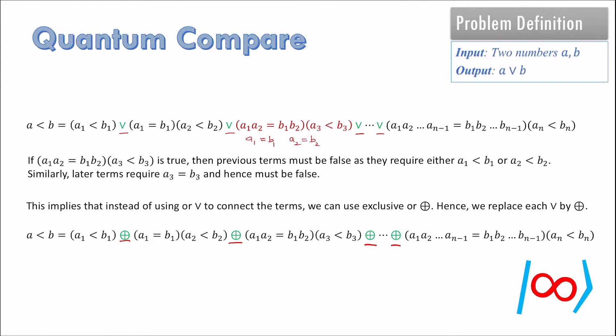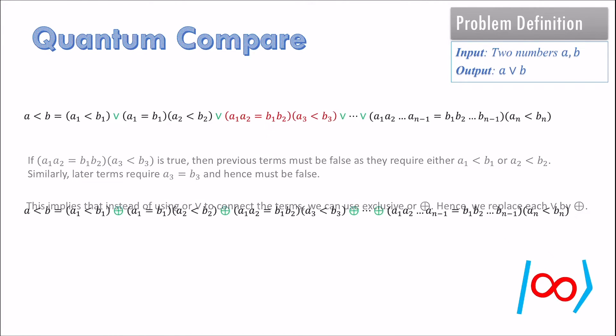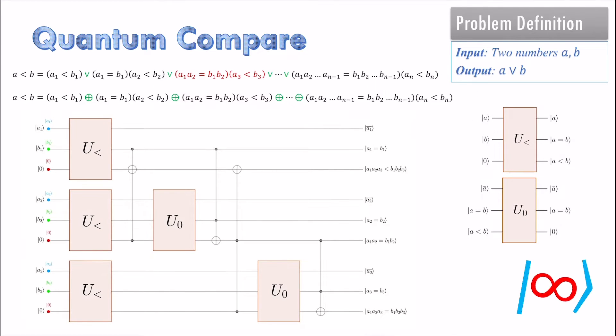Now we are ready to describe the final circuit. The circuit is shown for 3-bit numbers but can be generalized to any number of bits. We compute the expression term by term and store the values on the target qubit for the first bit comparison.